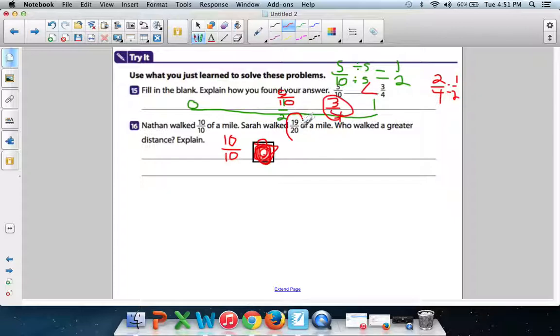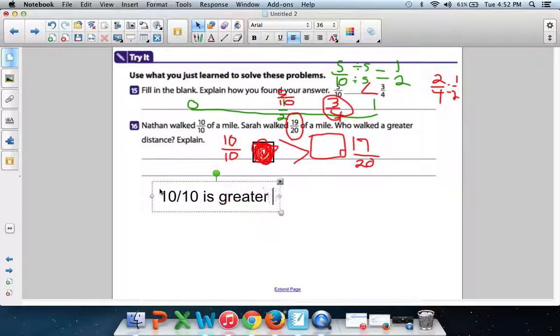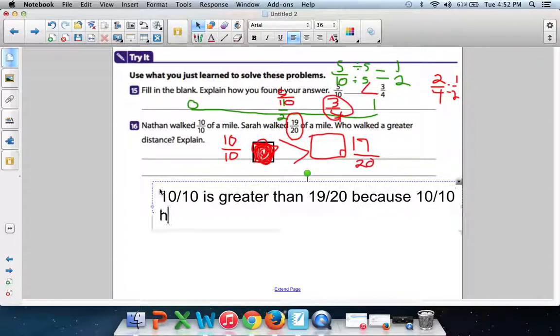But 19 out of 20, that means only 19 pieces are shaded in. So if we shaded in all the pieces except for 19, you'd still have this little itty-bitty square that wasn't shaded in yet. Meanwhile, this whole thing, 10 out of 10, that means all the pieces are shaded in. But this one, only 19 out of 20, this one means one little piece didn't get shaded in. So which one's greater? The one that has it all shaded in, or the one that has one little piece missing? The one that has it all shaded in is greater. So we can write 10 out of 10 is greater than 19 out of 20 because 10 out of 10 has all the...